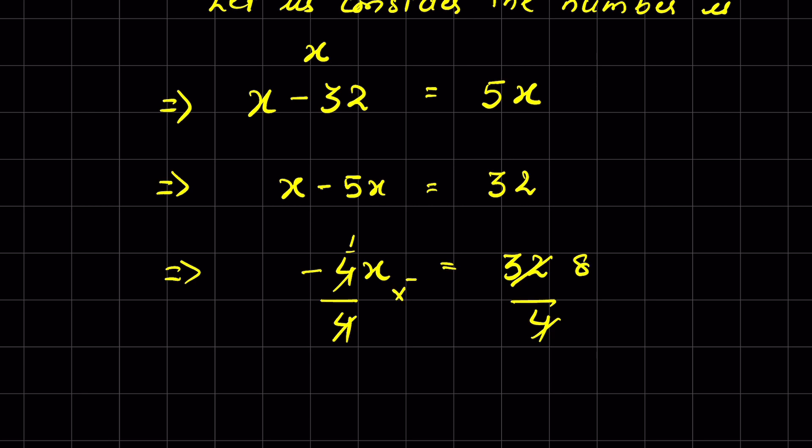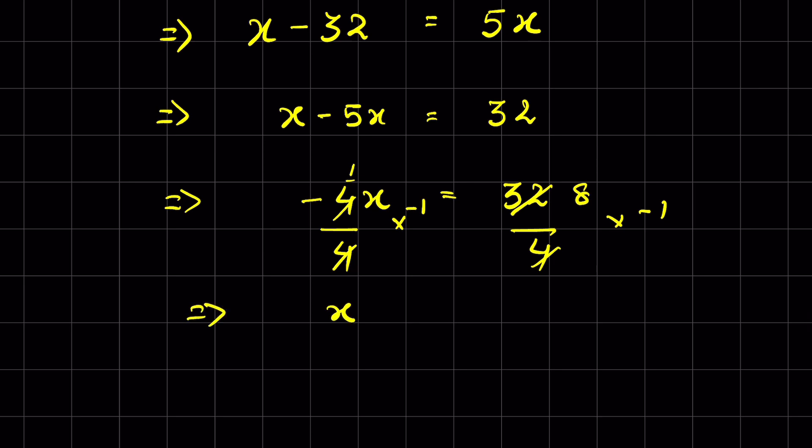Now multiply both sides by negative 1. This negative negative will be plus, so x will be minus 8. The number is negative 8.